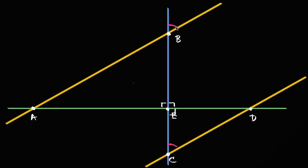Now this angle on one side of point B is also going to be congruent to that, because they are vertical angles, and we've seen that multiple times before. So we know that angle ABE is congruent to angle ECD. Sometimes this is called alternate interior angles of a transversal and parallel lines.